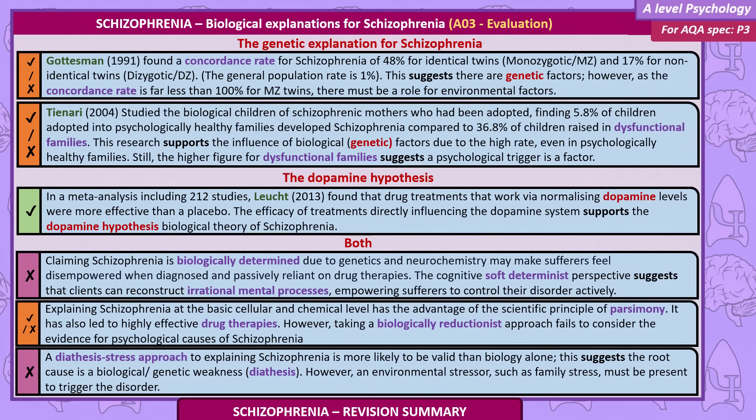The diathesis-stress approach to explaining schizophrenia is more likely to be valid than biology alone. It suggests the root cause is a biological genetic weakness — a diathesis — however an environmental stressor, such as family stress, must also be present to trigger the disorder.